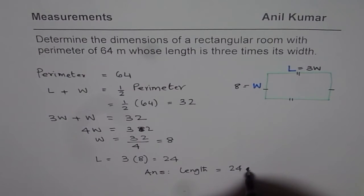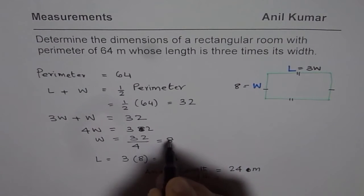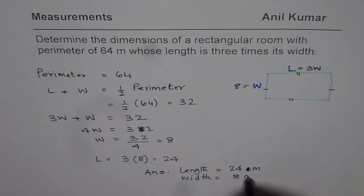meter. Since perimeter is in meters, meter and width equals to eight meters.